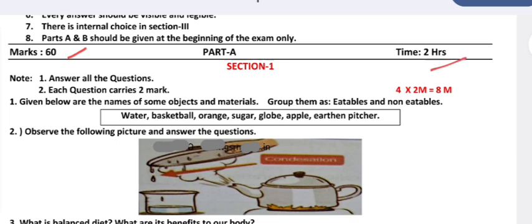Section 1: Answer all questions. Each question carries two marks. Given below are the names of some objects and materials. Group them as eatables and non-eatables: water, basketball, orange, sugar, globe, apple, earthen pitcher.